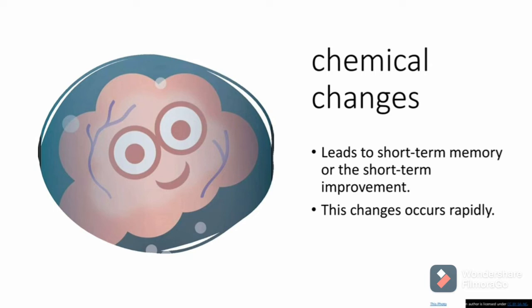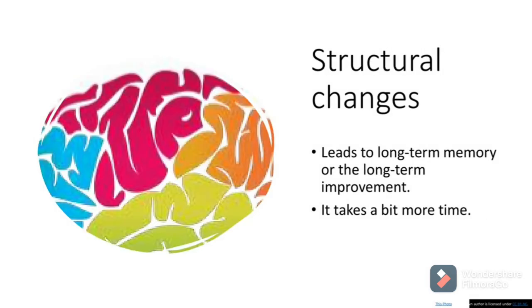Talking about structure, during learning the brain can change the connections between neurons. This leads to change in physical structure of the brain and it takes a bit more time. This leads to long-term improvement or the long-term memory.